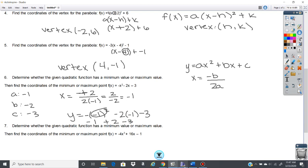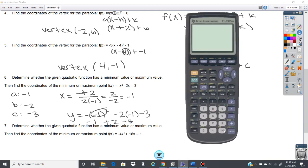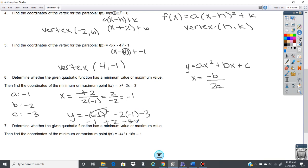So negative 1 plus 2... oh, hold on. There we go. Sorry, negative 1 plus 2. We really don't need that for this, I'm just showing. And negative 2. So our vertex is (-1, -2).